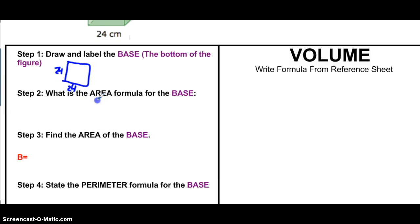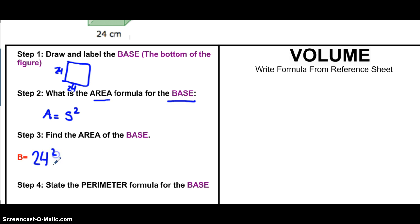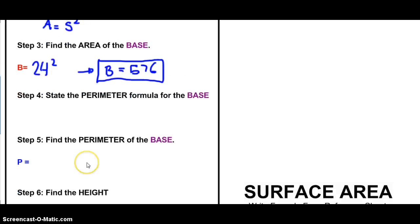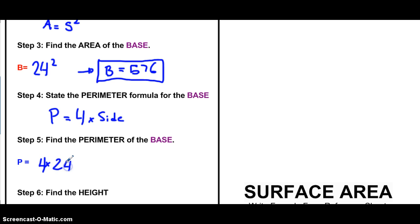Now I'm going to find the area of the base. After drawing the base — which is a square — I need the formula. Area equals the side squared. So to find the base, I take the side, which is 24, and square it. That gives me 24 squared equals 576. That is the area of our base. Next, find the perimeter: perimeter equals 4 times the side. So 4 times 24 gives us a perimeter of 96.